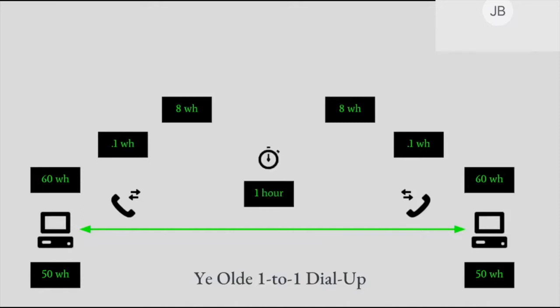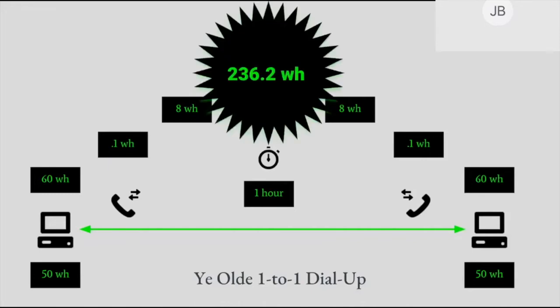Let's assume that Dan and I talked for one hour because easy math. And also, if there's one constant in this universe, it's that teenagers are going to chat for as long as you'll let them. So this is our entire system — seems maybe complex, but it'll get way more complex after this. What's this all add up to? A grand total of 236.2 watt-hours.